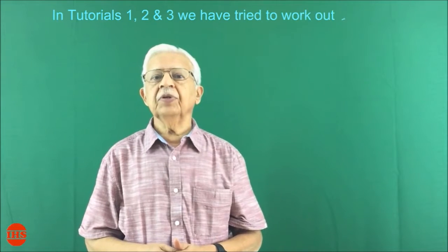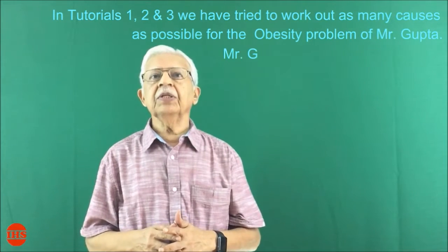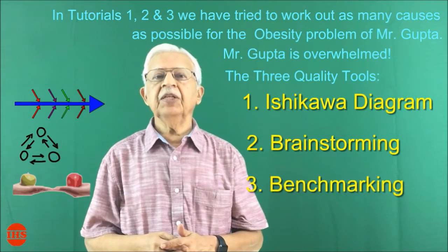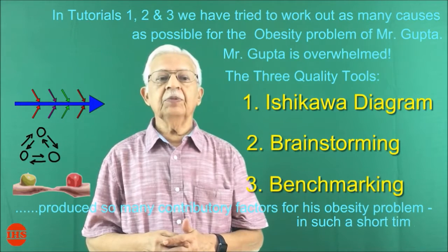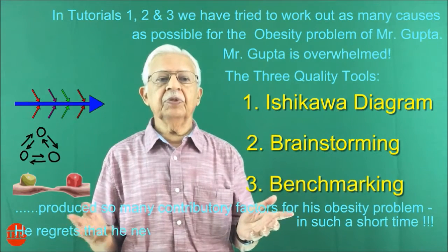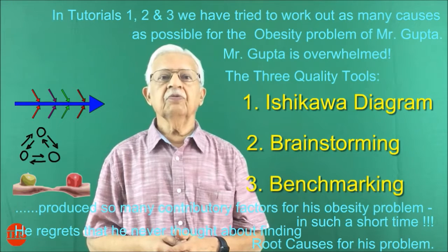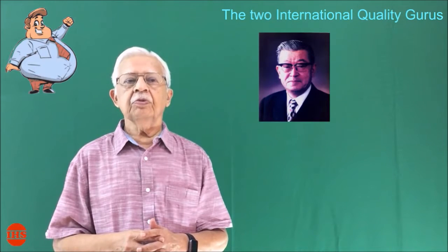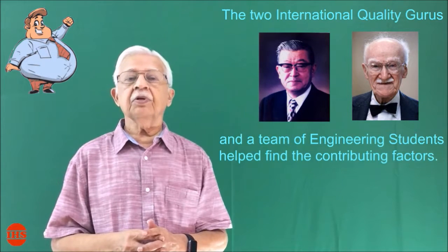In Tutorials 1, 2 and 3, we tried to work out as many causes as possible for the obesity problem of Mr. Gupta. Three quality tools — the Ishikawa Diagram, Brainstorming, and Benchmarking — produced so many contributory factors for his obesity problem in such a short time. He regrets that he never thought about finding root causes for his problem. The two international quality gurus and a team of engineering students helped find the contributing factors.